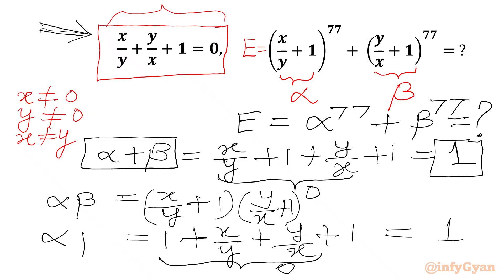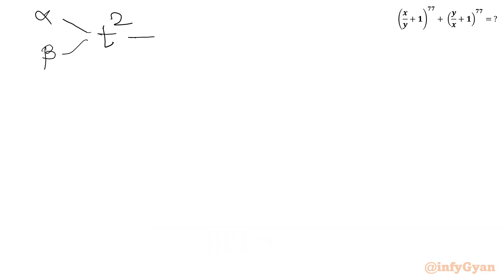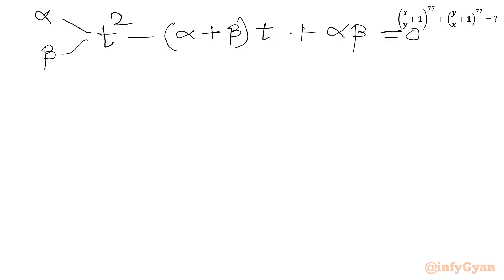So we have two important equations: alpha + beta = 1 and alpha * beta = 1. Recalling sum of roots and product of roots, we can form a quadratic equation in t whose roots are alpha and beta: t² - (alpha + beta)t + alpha*beta = 0, which gives us t² - t + 1 = 0.